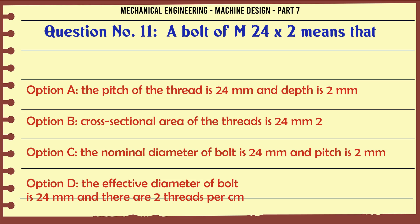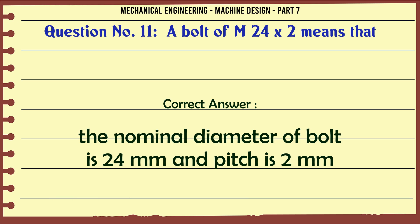A bolt of M24×2 means that: a) pitch of the thread is 24 mm and depth is 2 mm, b) cross-sectional area of the threads is 24 mm², c) the nominal diameter of bolt is 24 mm and pitch is 2 mm, d) the effective diameter of bolt is 24 mm and there are 2 threads per cm. The correct answer is: the nominal diameter of bolt is 24 mm and pitch is 2 mm.